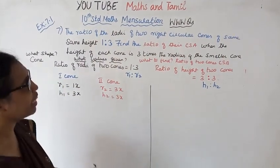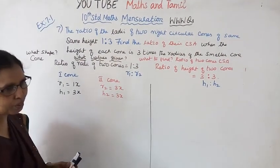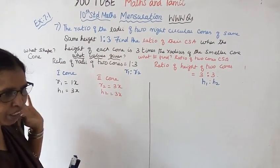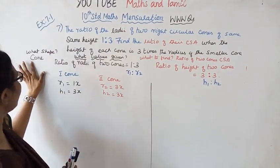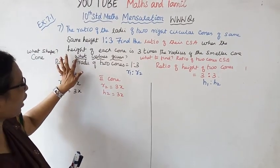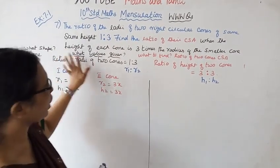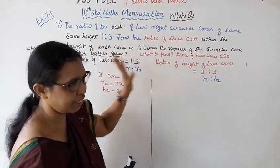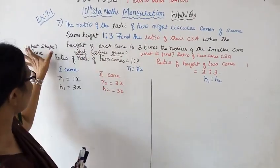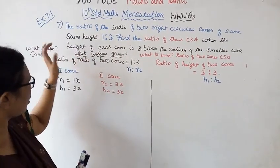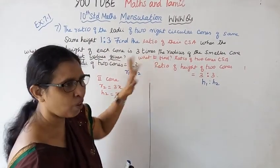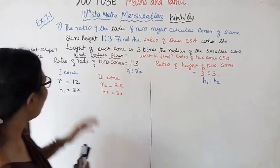Now I have to show you the WWW Costing method. First question: What shape? What values are given? What to find? Just a short algorithm — what shape, what values, what to find.